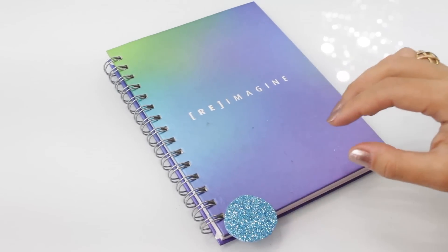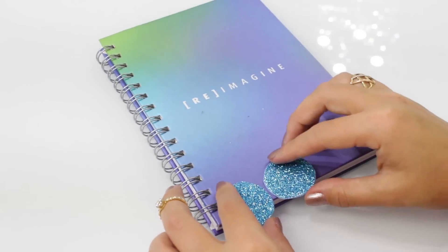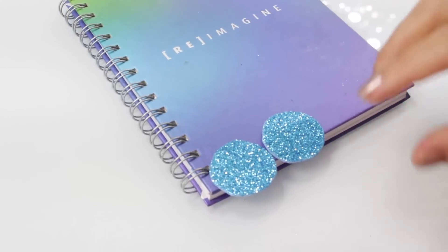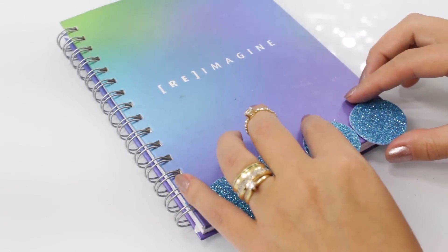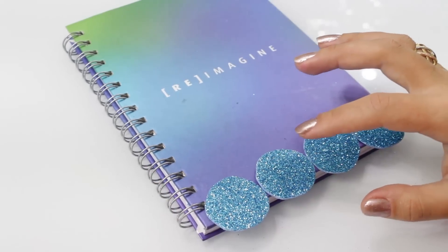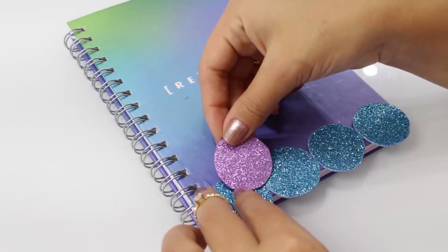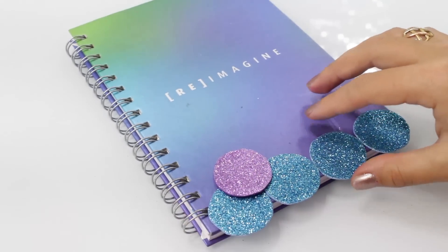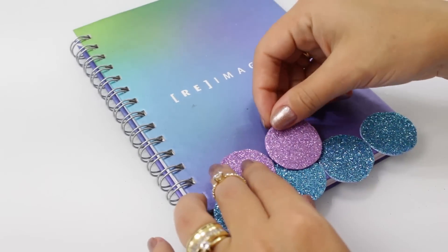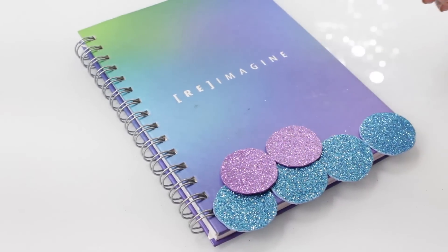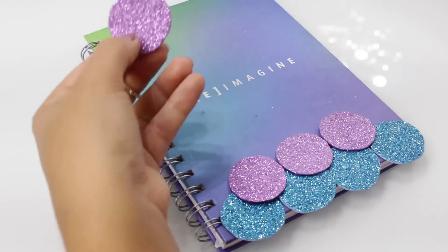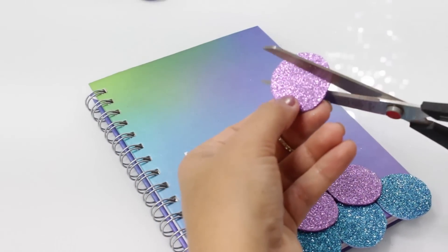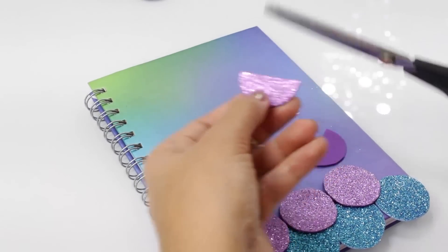Feito isso, agora eu vou começar a posicionar esses círculos no meu caderno. O certo mesmo é você começar a fazer essa sobreposição de baixo pra cima, que as escamas fiquem uma sobre a outra pra dar realmente o efeito de sereia. E aí você vai ter que intercalar. Em uma fileira você coloca todos os círculos em uma posição, e na fileira de cima você vai colocando um círculo no meio do círculo de baixo.